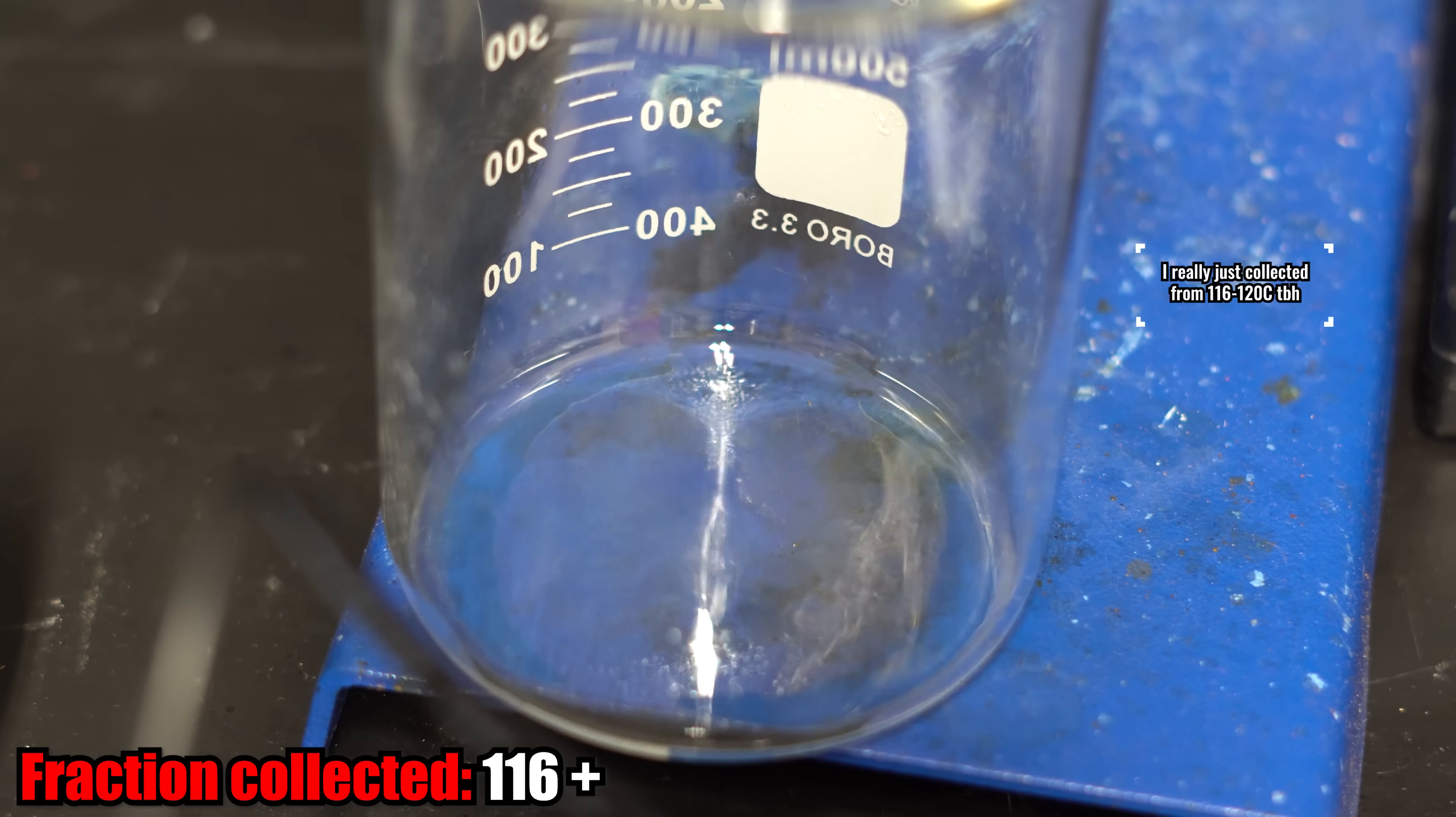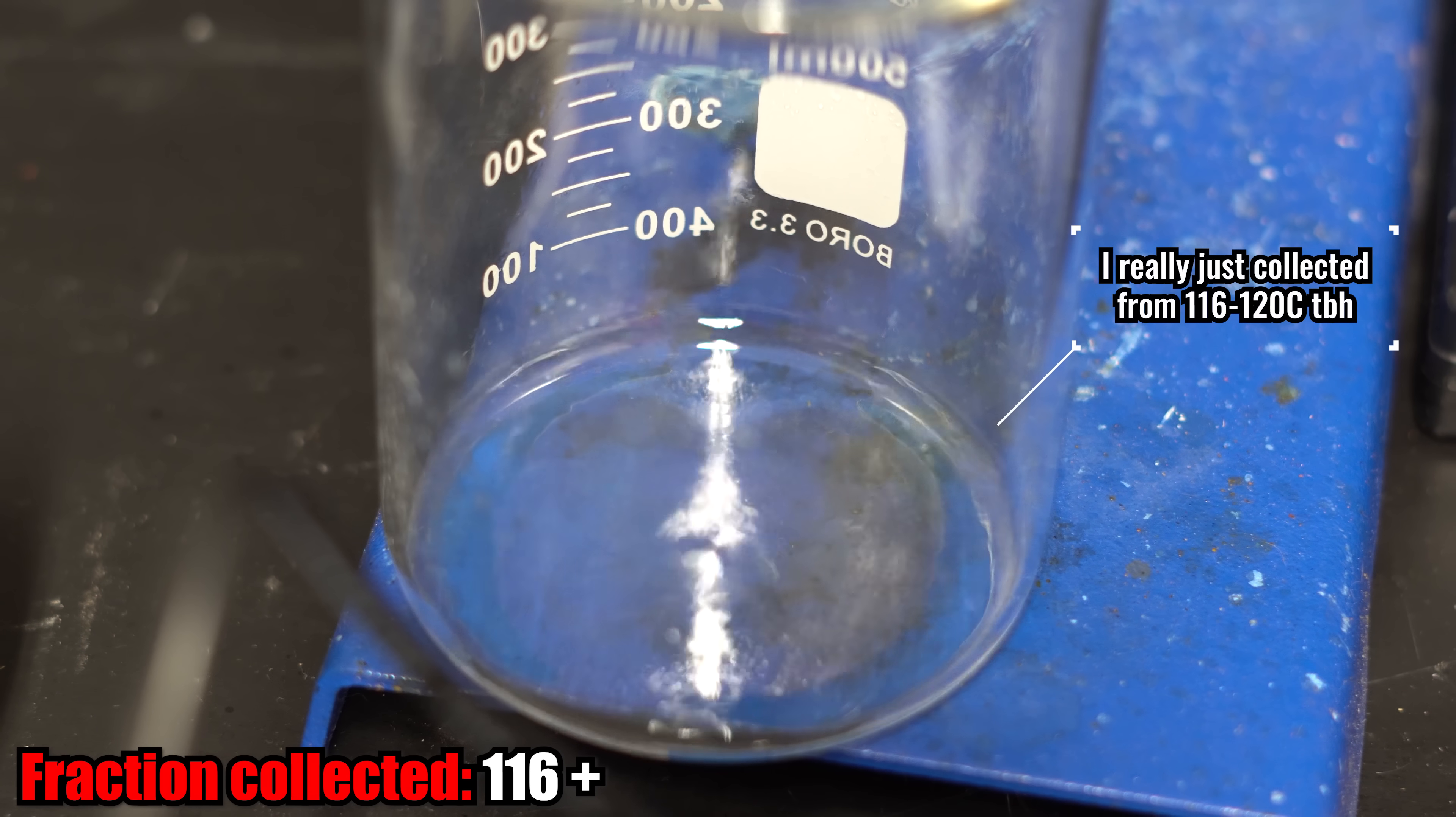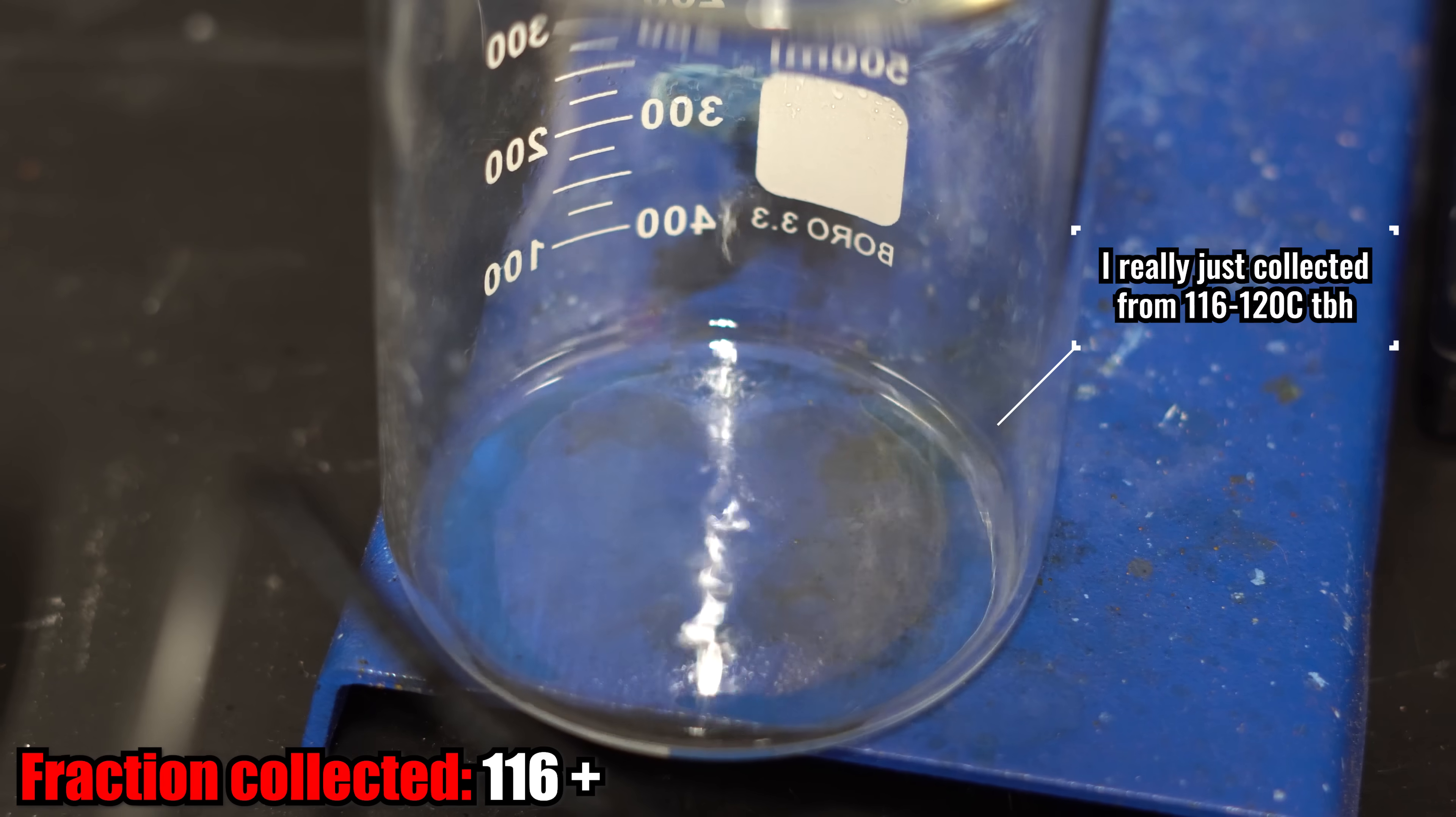Once the temperature reached 116 degrees Celsius, I switched the flask out just for a simple beaker. This should be the butan-1-ol, but likely there's a little bit of nitroethane in it. I'm also going to save this and put this back into the bottle.